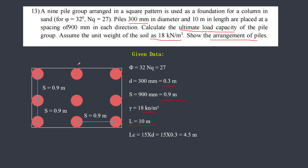This is the arrangement of the pile. The number of piles is 9 — you count 1, 2, 3, a group of 3 arranged in a 3×3 pattern, giving 9 piles total. The spacing S = 900 mm, which is the center-to-center distance between the piles. This spacing is 0.9 m on each side. This entire arrangement is called the pile block.